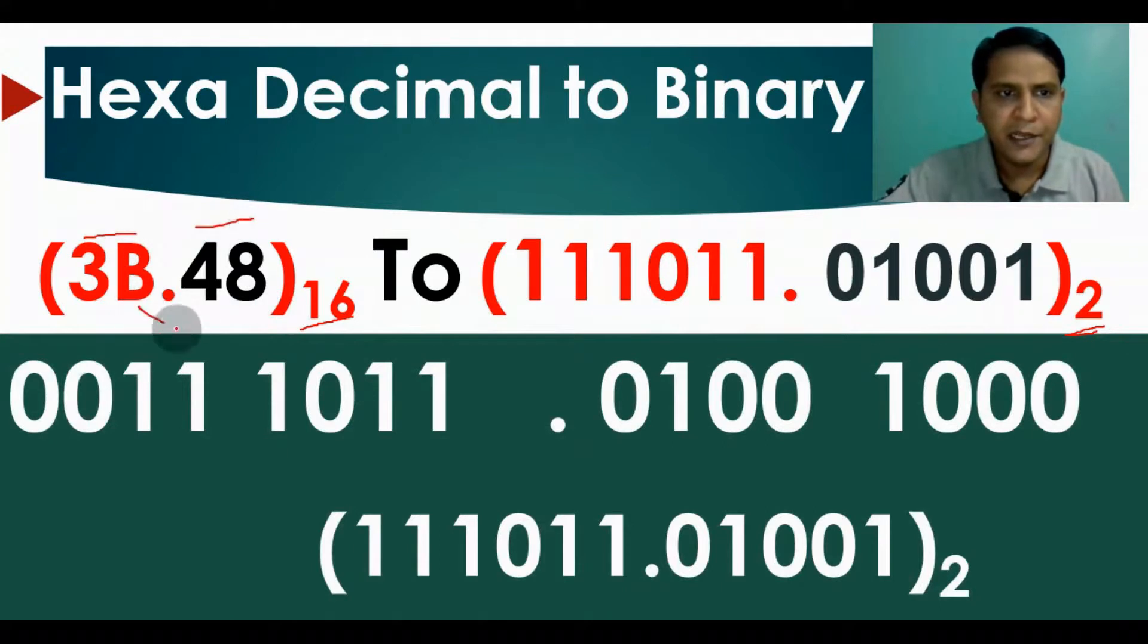B in binary is 11, so it can be written as 1011. And 3 in binary is 0011. For the fractional part, 4 can be written as 0100.